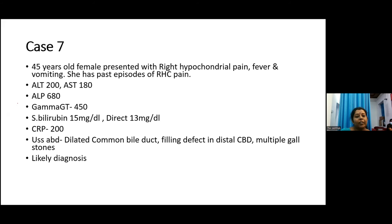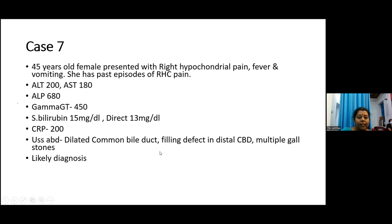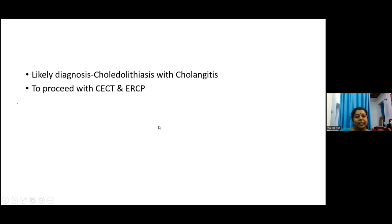Case seven: a 45-year-old female presented with right hypochondrial pain, fever, and vomiting with past episodes of similar pain. Liver enzymes: ALT 200, AST 180, with very high GGT and alkaline phosphatase, very high bilirubin with elevated direct fraction, and elevated inflammatory markers. Ultrasound revealed a dilated common bile duct with a filling defect in the distal CBD and multiple gallstones. Diagnosis: choledocholithiasis with cholangitis. We need to proceed with CECT and ERCP with intervention.